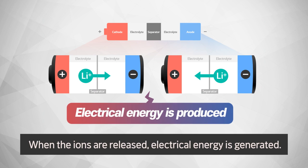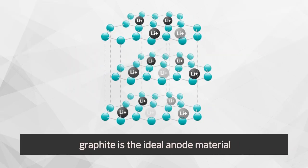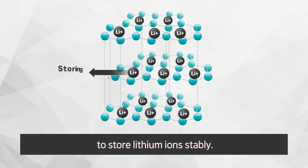When the ions are released, electrical energy is generated. Thanks to its consistent layered structure, graphite is the ideal anode material to store lithium-ion stably.